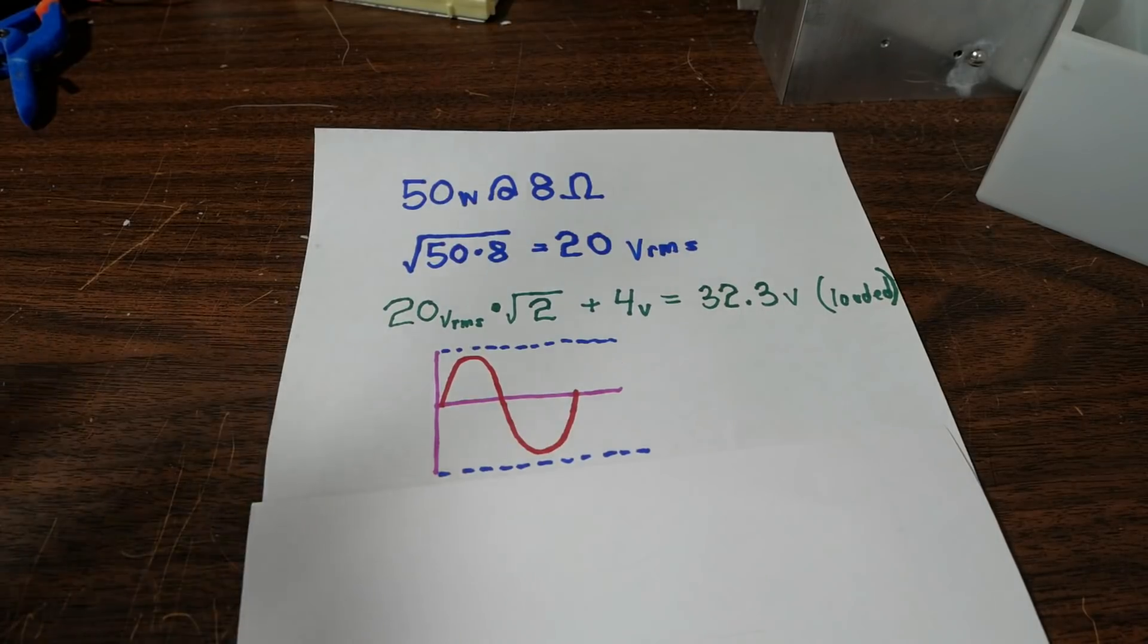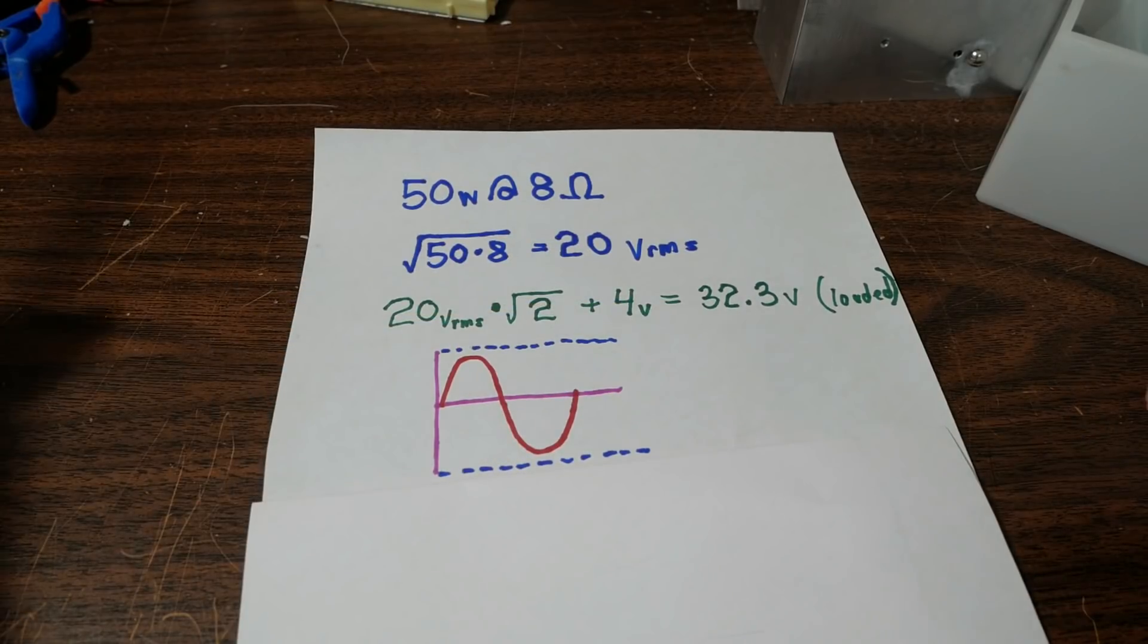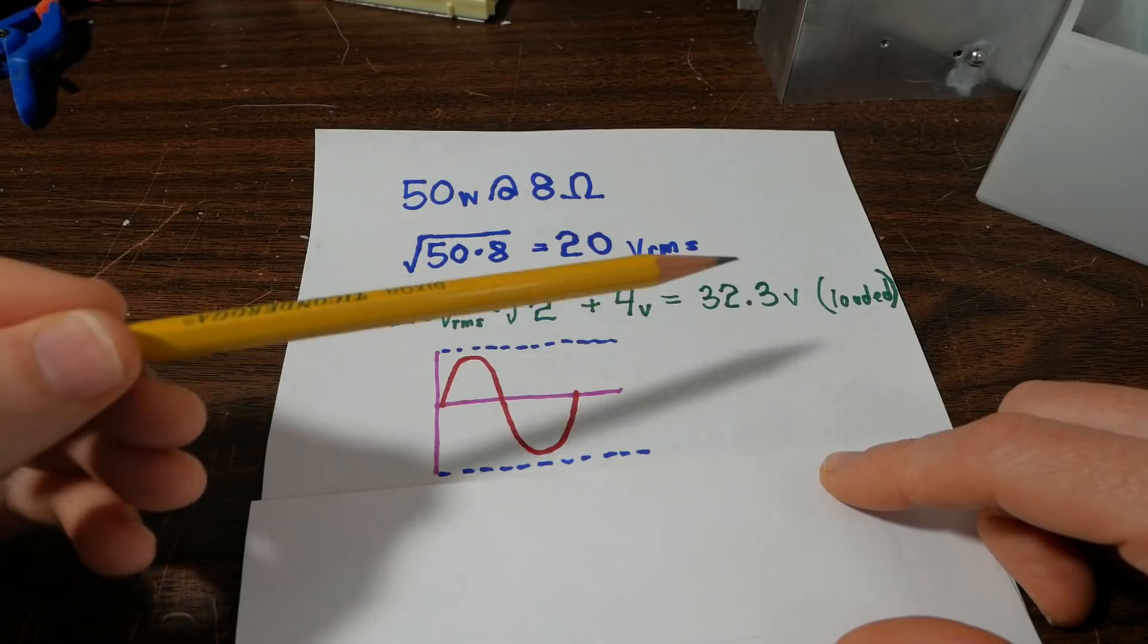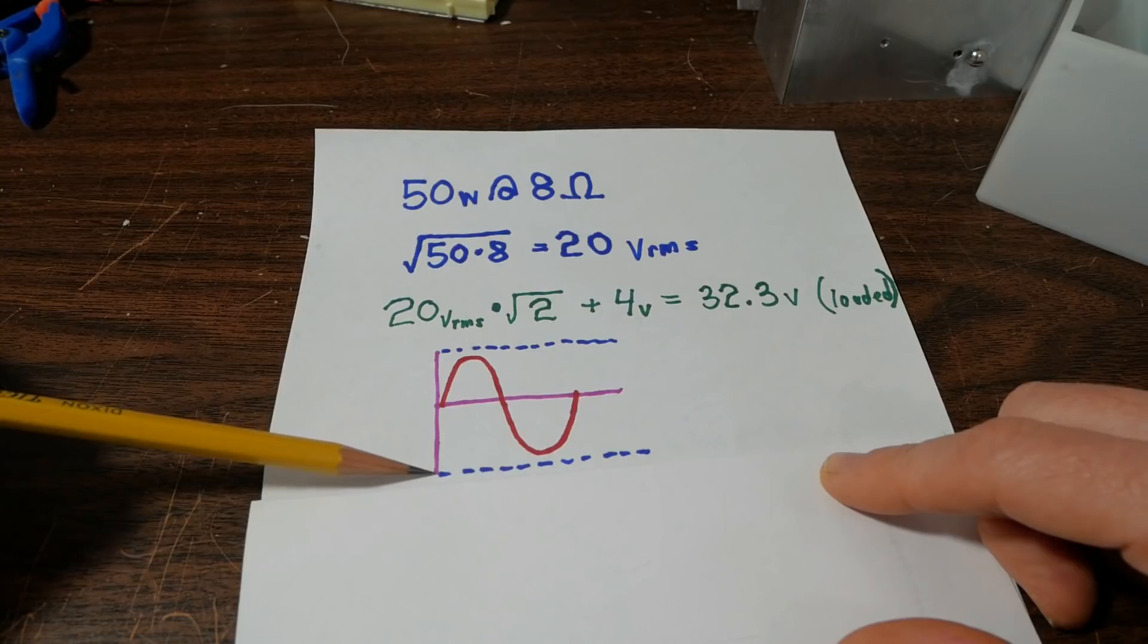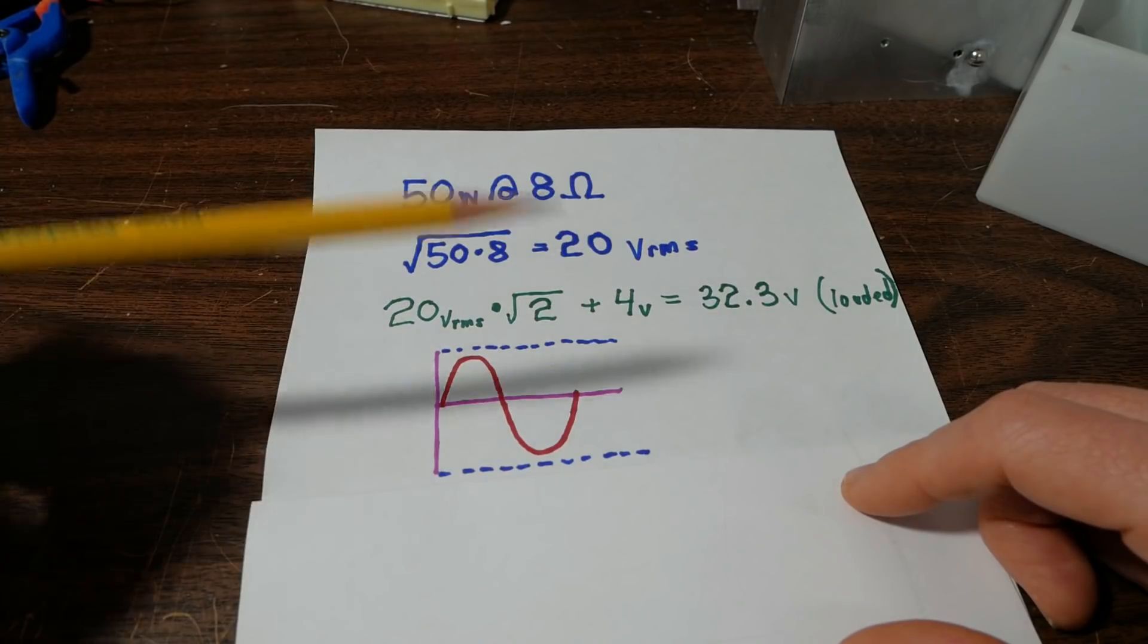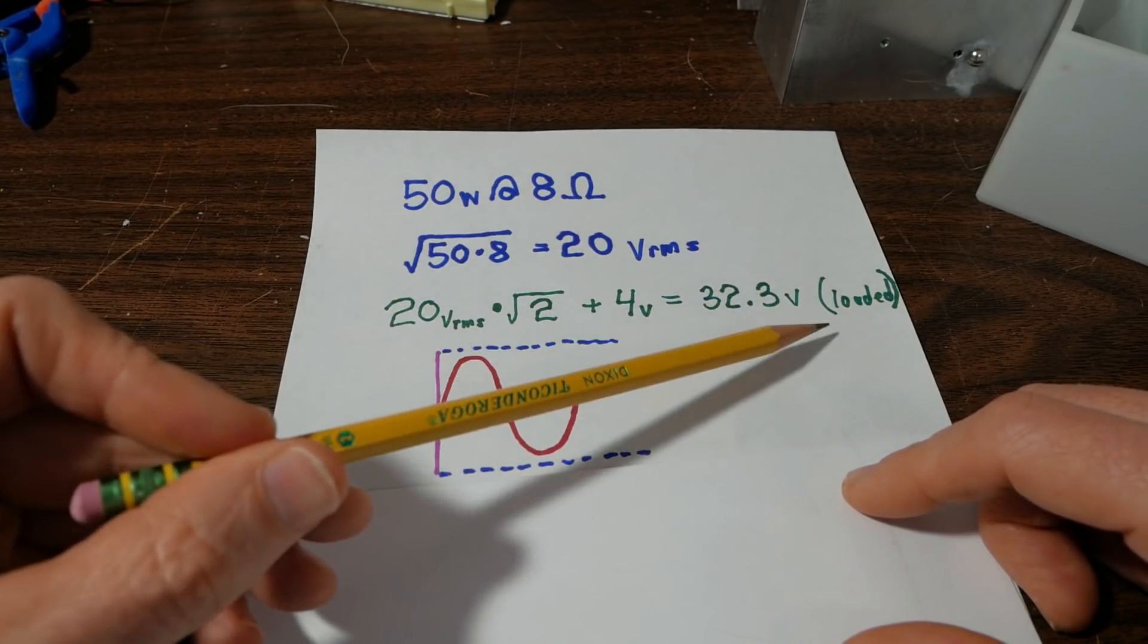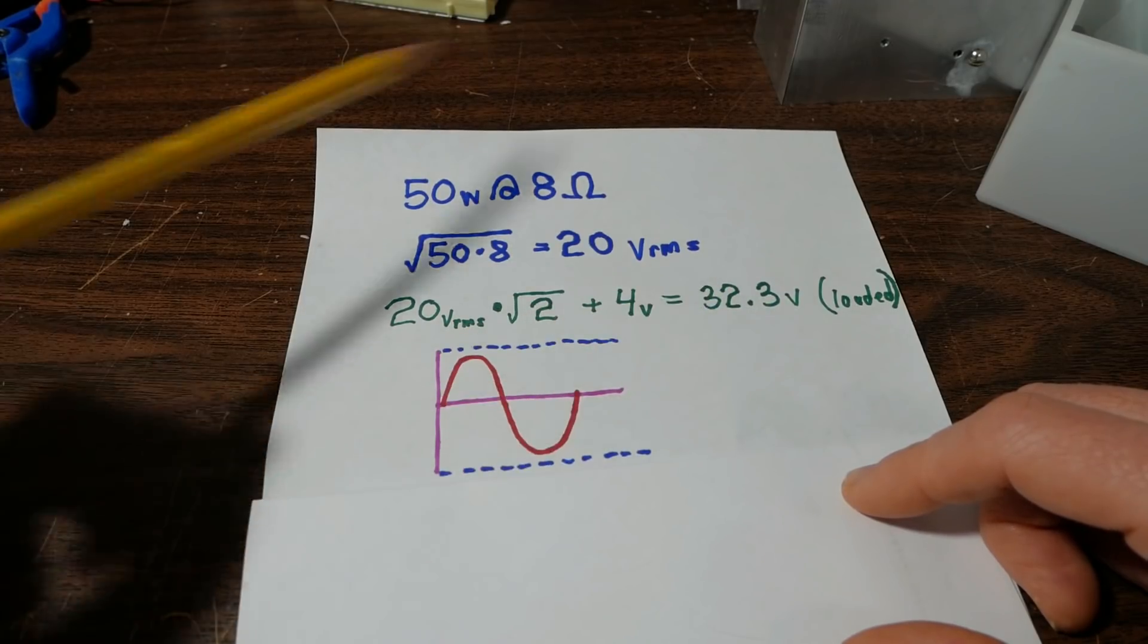Now because of the load regulation of the power supply, when it's sitting idle, this voltage will be much higher, might be 35, 36 volts. And that's plus and minus, it'll need a plus 35, 36 and a minus 35, 36 volts. But we'll look at that in more detail. But for the amplifier to put 50 watts into 8 ohms, the loaded supply voltage under that condition will be 32.3 volts.